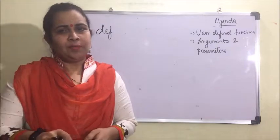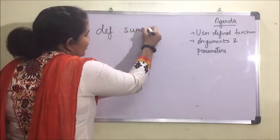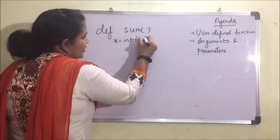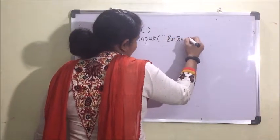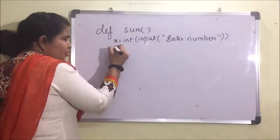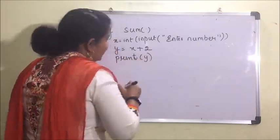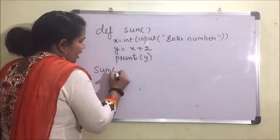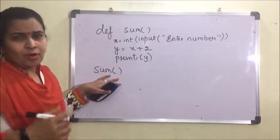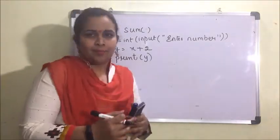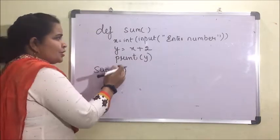In my previous video I explained how to find the factorial of a number using functions. Now, if we want to add two numbers, suppose we write: sum(x), x = int(input('enter number')), y = x + 2, and print y. If I want to call this function and send a number while calling it — send any number and then calculate the sum or factorial — suppose I want to send 5 here.